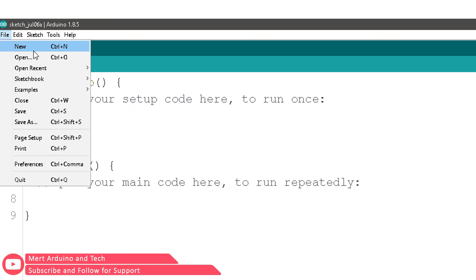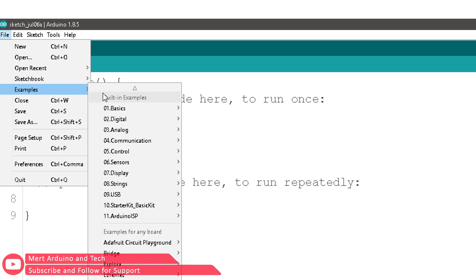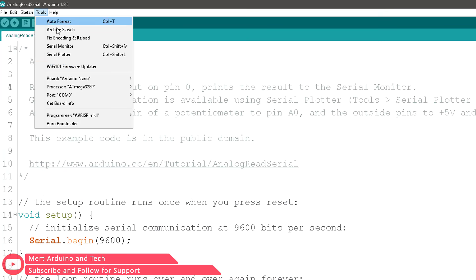Simply open up Arduino IDE and go to File, Examples, Basics, Analog Read Serial. Then upload this code to your board.